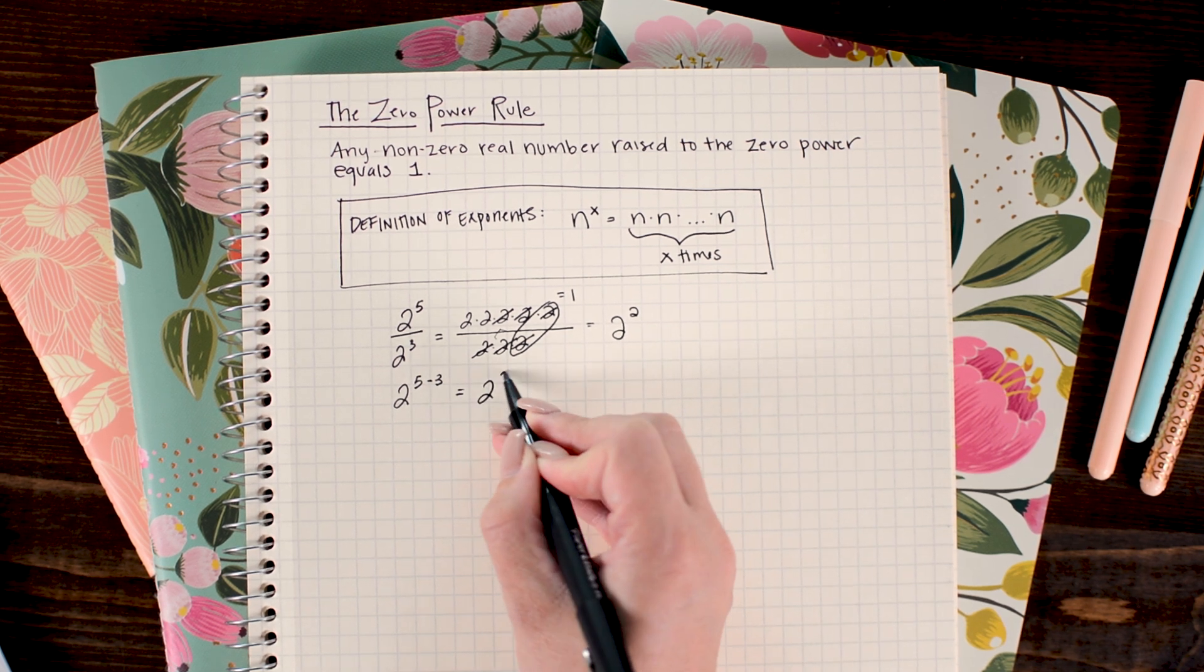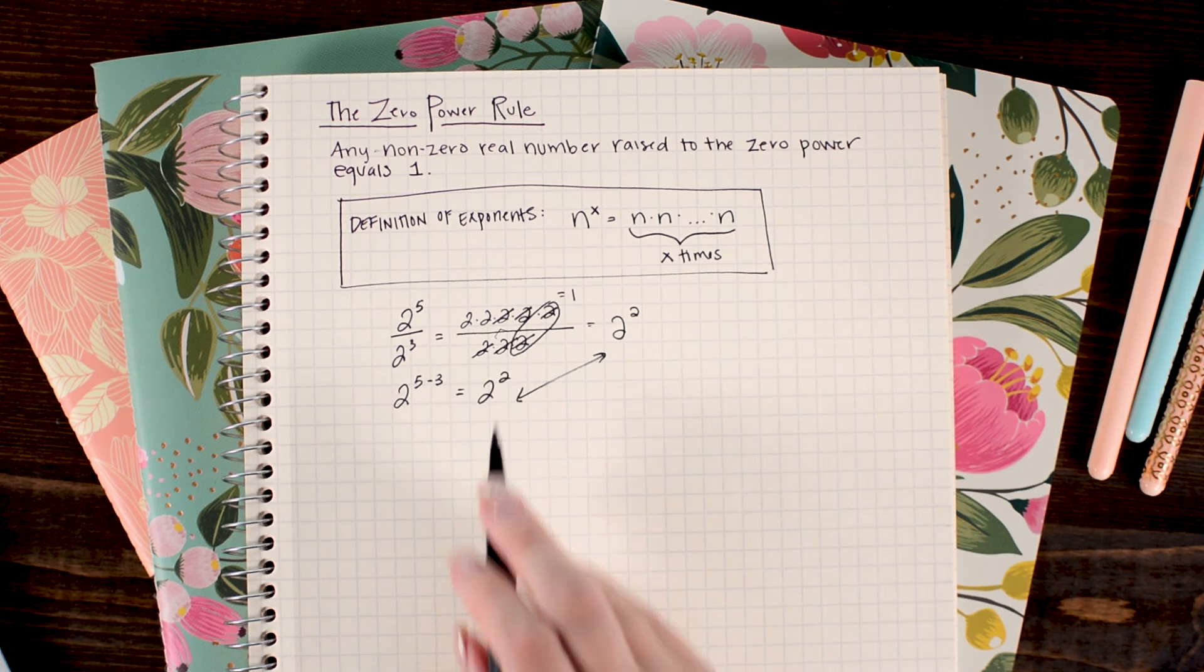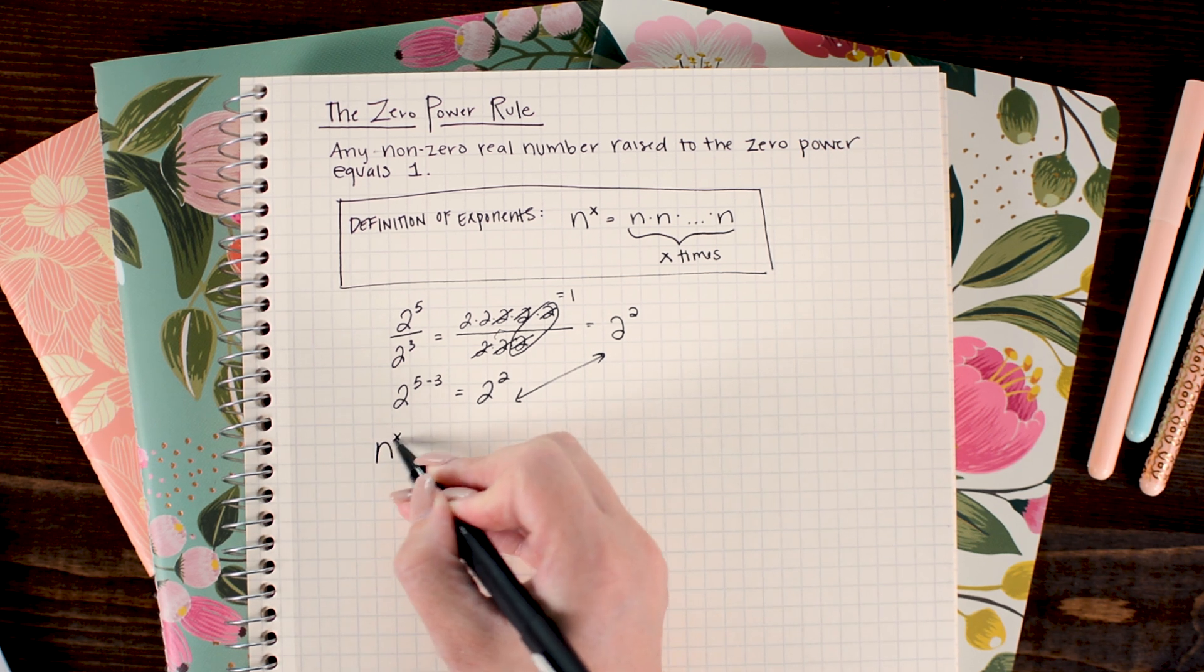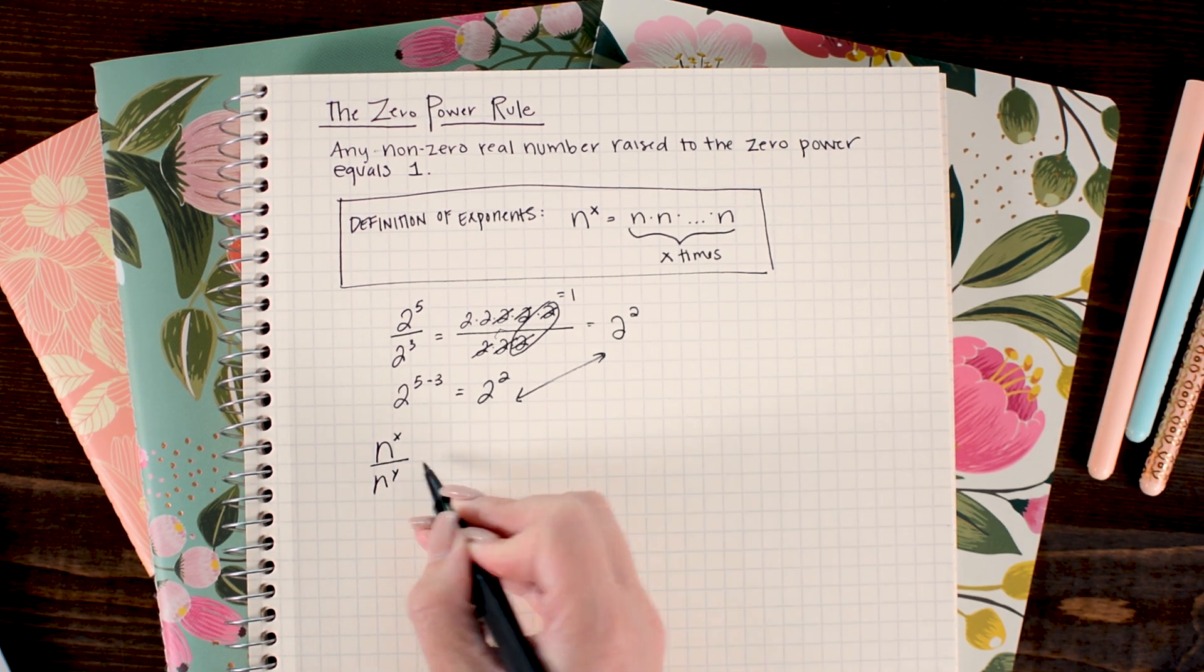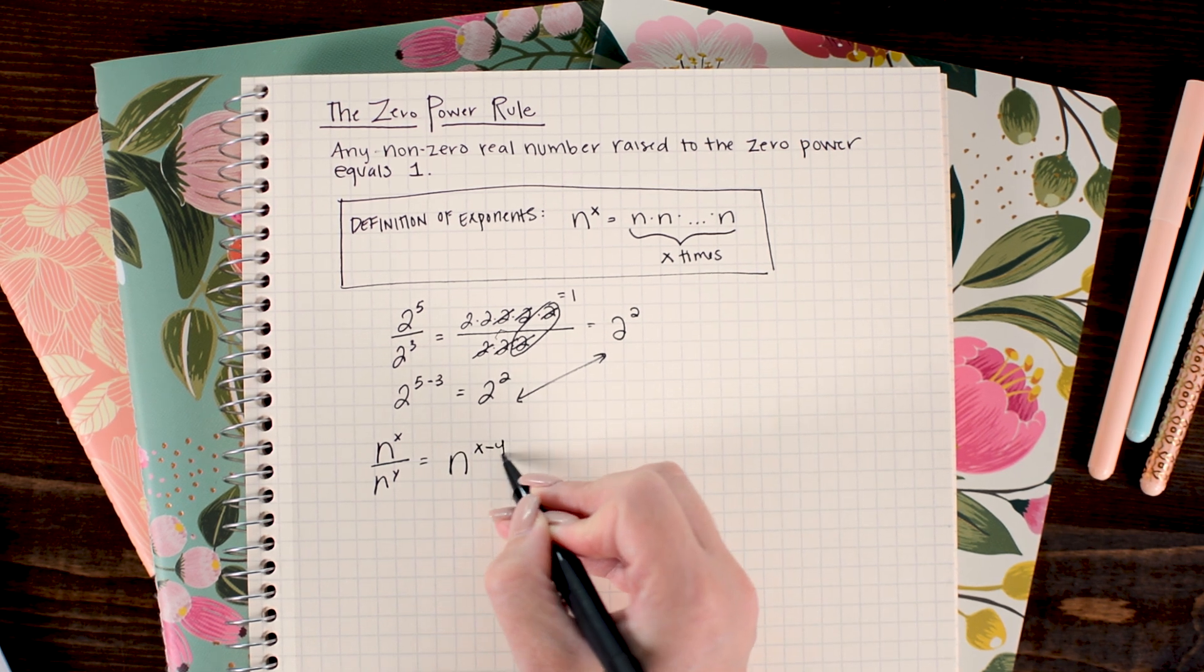Of course that gets us that 2 squared just like we found in the problem above. So in general I could write a rule: n to the x over n to the y equals n to the x minus y.